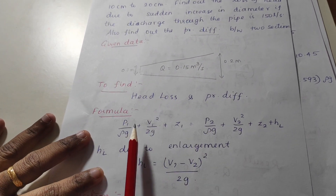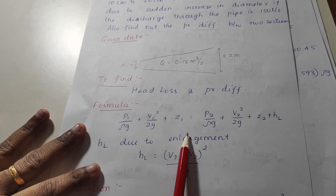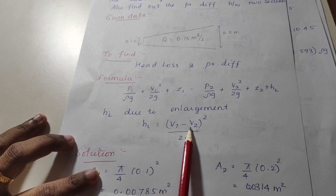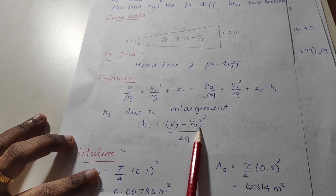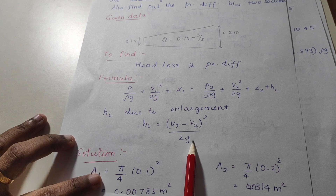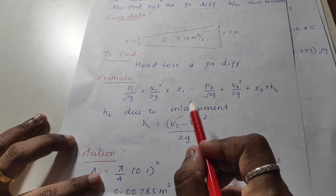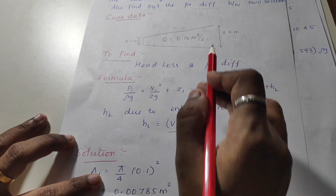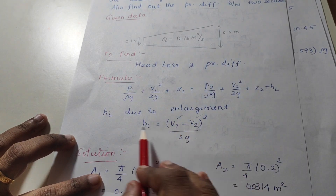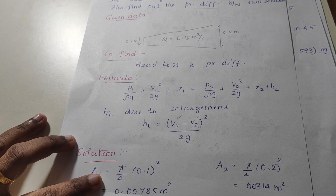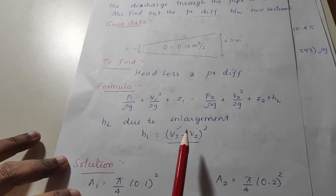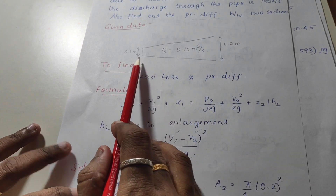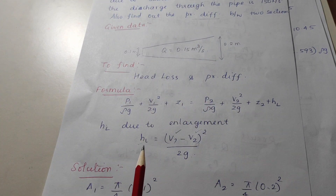The formula for head loss due to enlargement is: head loss equals (V1 minus V2) whole squared divided by 2g. Find the velocity at section 1, find the velocity at section 2, substitute, and you get the head loss due to enlargement. We also need to find the pressure difference, P1 minus P2.